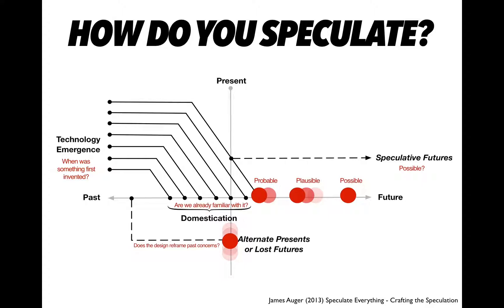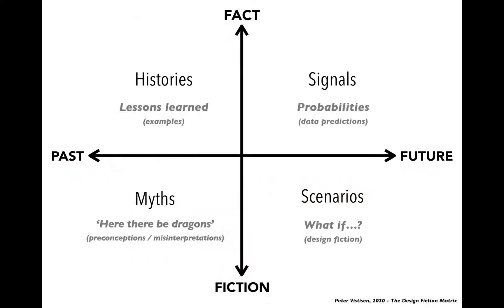I have a tool that can sort of make it a bit more close to what we already do as designers when we work with post-it notes and try to make our affinity diagrams and stuff like that. And that is a method that I developed a couple of years ago, but first this year really have formalized into a framework that I call the design fiction matrix. And that is basically another diagram where you have the past and you have the future, and then you have the fact and you have fiction on the vertical axis.